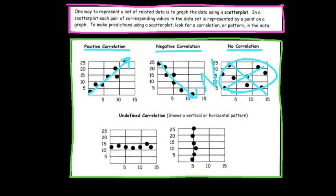The last two types are undefined correlations — either a vertical line or a horizontal line. You'll see a trend that stays constant, either horizontally or vertically. It's essentially unchanging throughout the data.